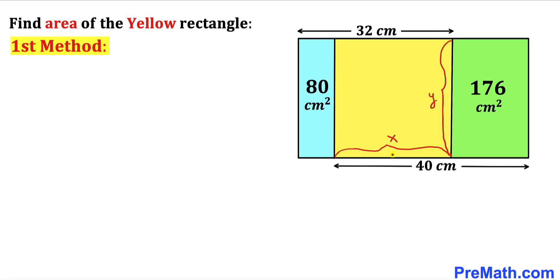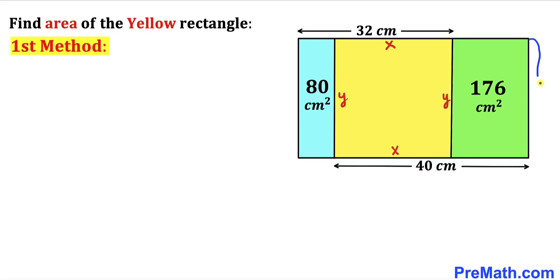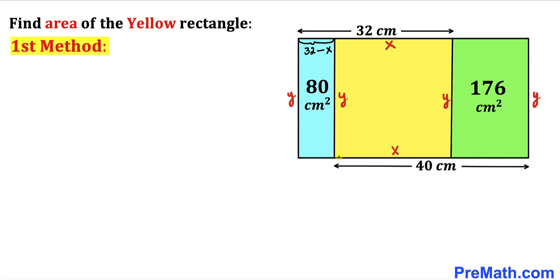Since we are dealing with this yellow rectangle, this side length is going to match the opposite side — if this side length is x, this has got to be x centimeter as well. Likewise, these side lengths are congruent: if this is y, this has got to be y as well, and these side lengths are y centimeter as well. We know that the whole side length is 32 centimeter, so this side length is going to be 32 minus x. Likewise, the whole side length is 40 centimeter, so this side length is 40 minus x.